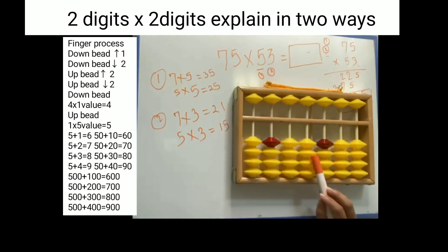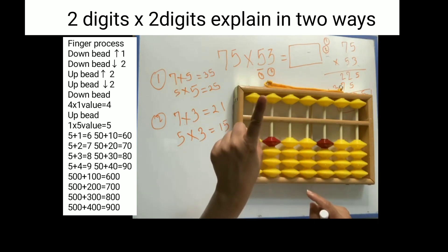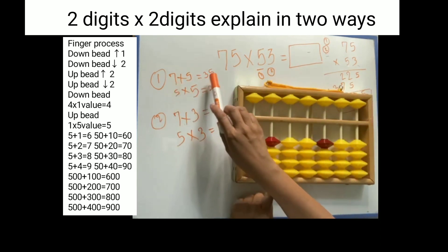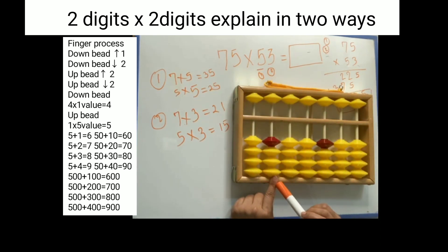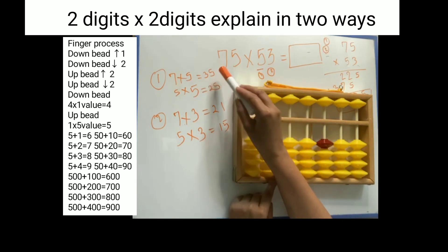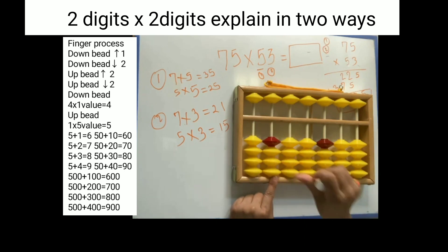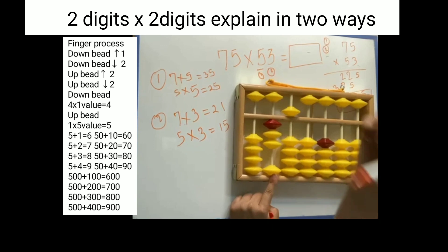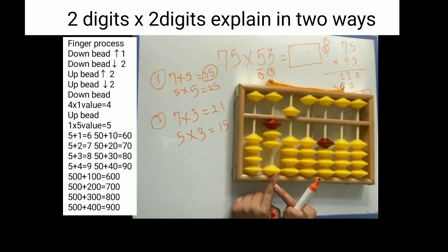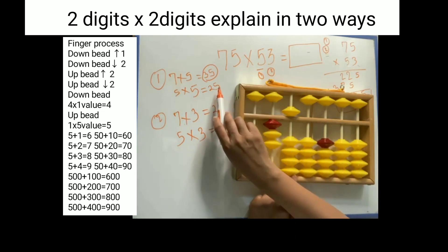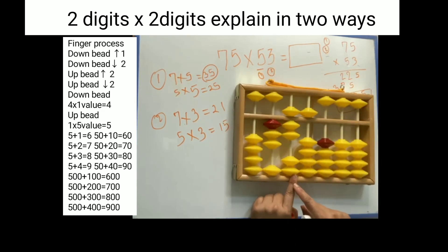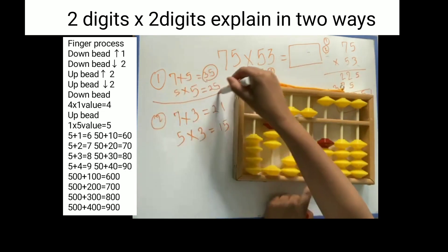Count one, two, three, four rods and put your left-hand pointer finger here. Start: seven fives are 35. This is our tens position for the answer — three goes in the tens position, five goes in the ones position. Place three here and five here. Then change your position one step to the right. Next is 25: two goes in the tens position here, and five goes here. First group is finished.